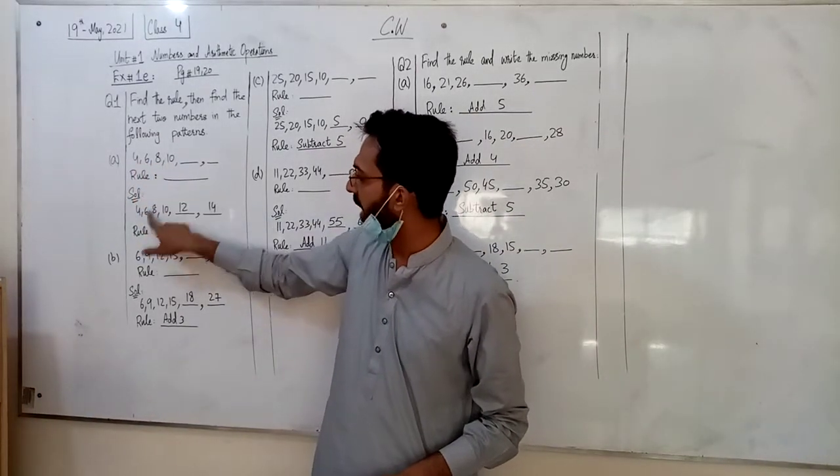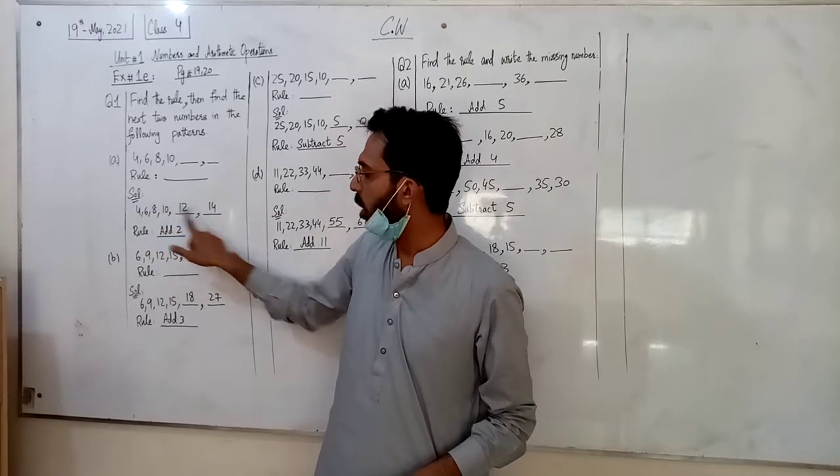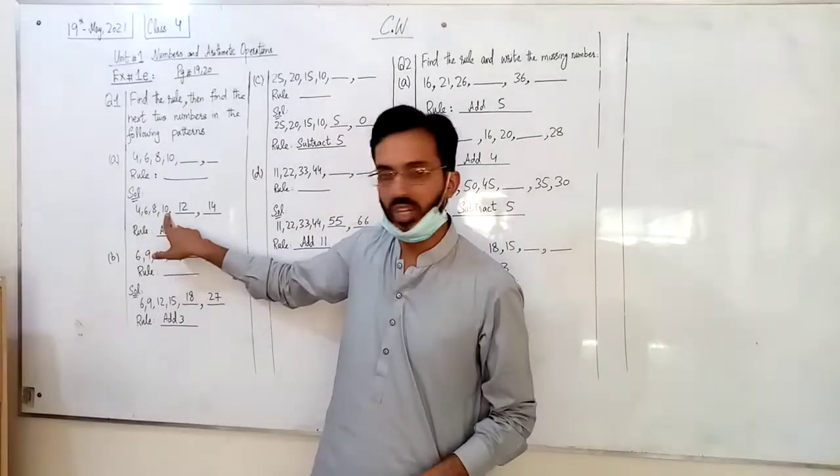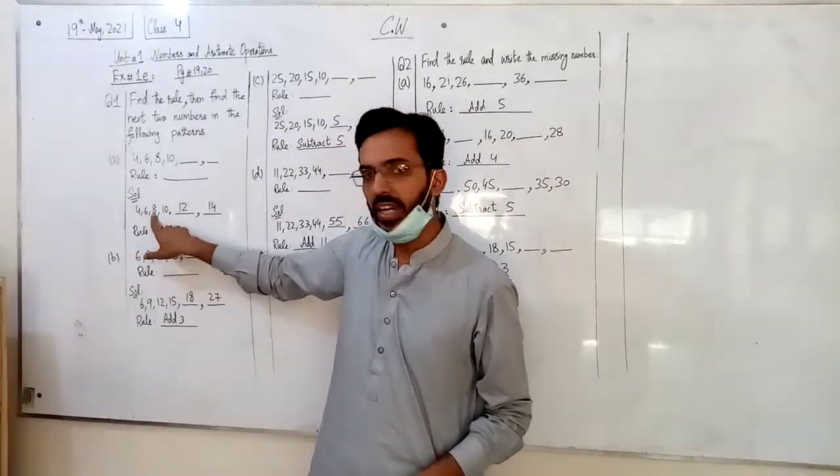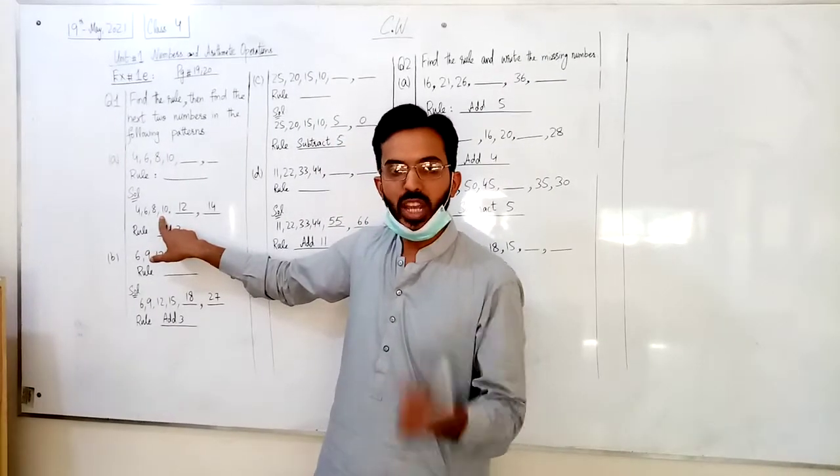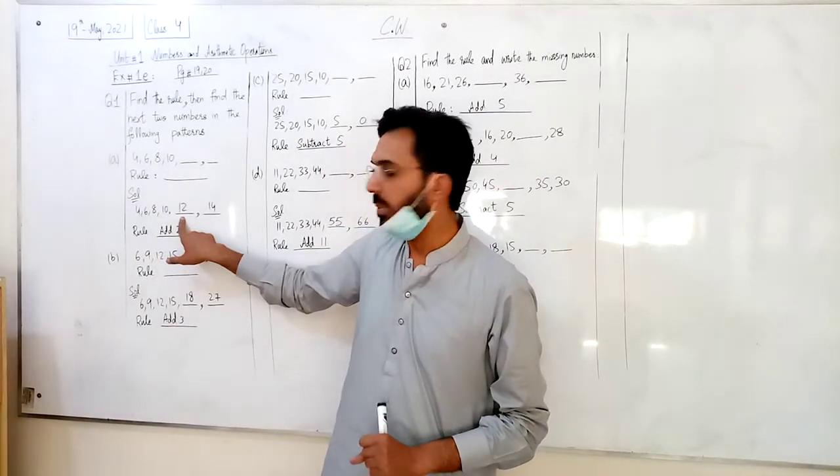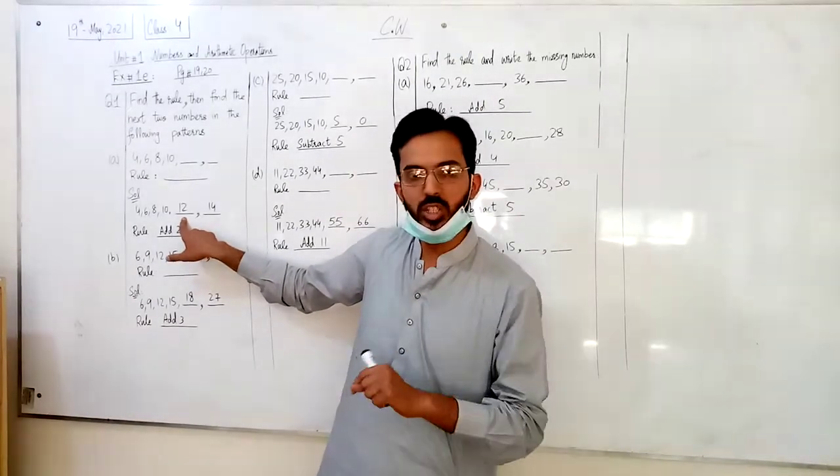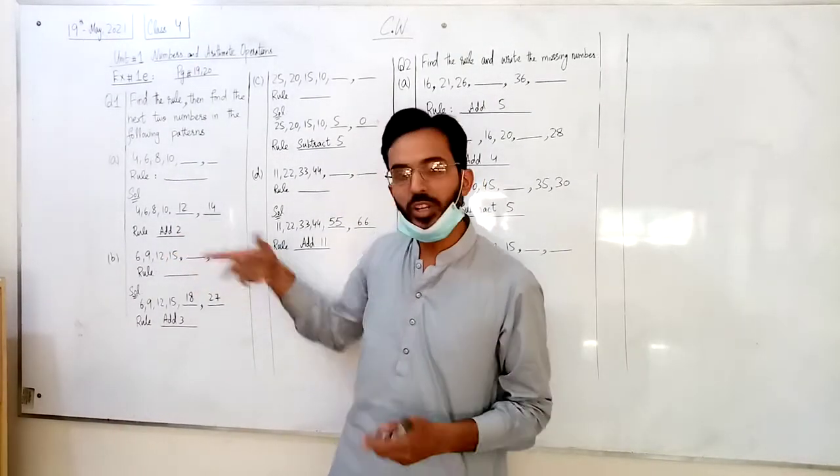This is the situation: 4, 6, 8, 10. Next two numbers, what are we going to do? All of these numbers are plus 2. 4 plus 2 is 6, 6 plus 2 is 8, 8 plus 2 is 10, 10 plus 2 is 12. So this is the rule. Here we have 12, 12 plus 2 is 14. So simple. And rule what is that? Next two numbers add 2. Start with next to terms: 12 and 14.